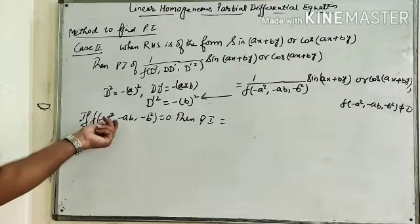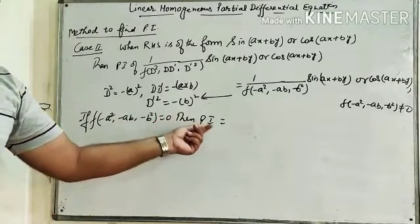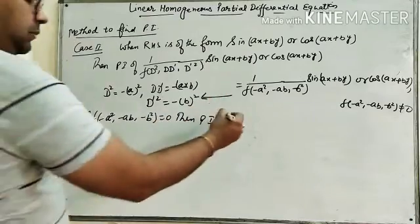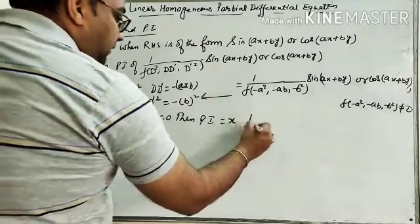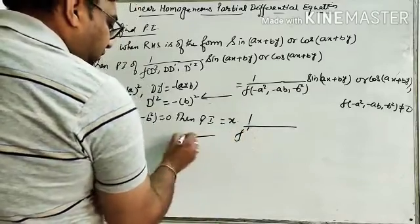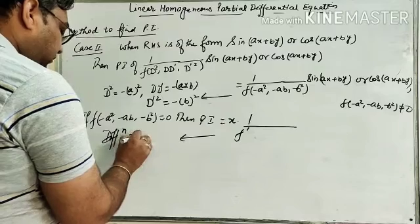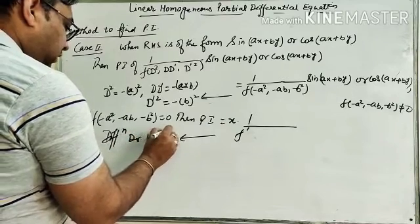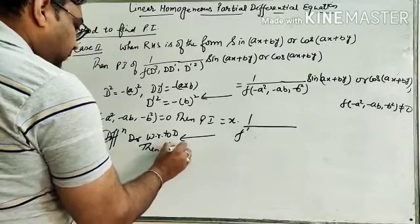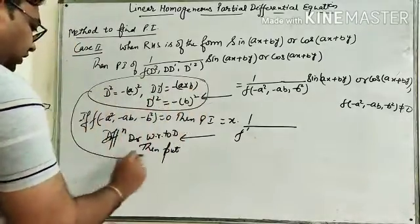If f(−A², −AB, −B²) = 0, then PI can be calculated by multiplying by x and differentiating the denominator with respect to D. Then put this entire condition again.